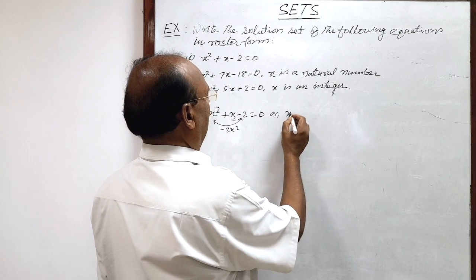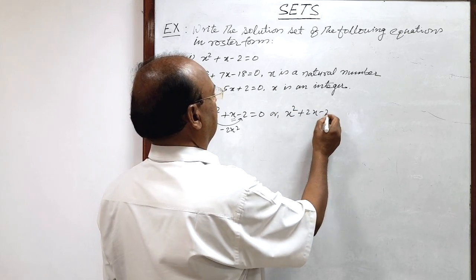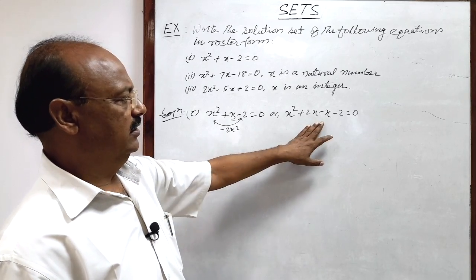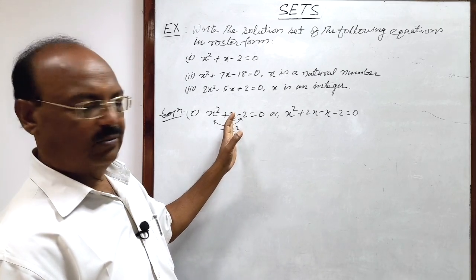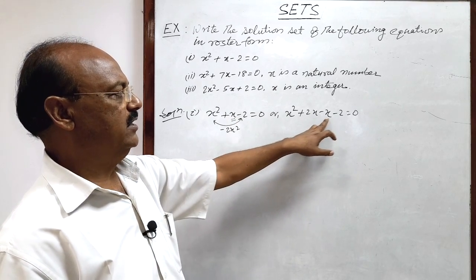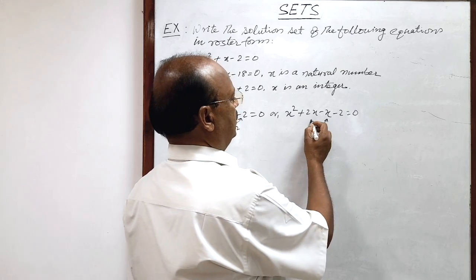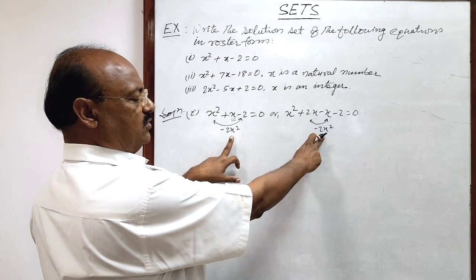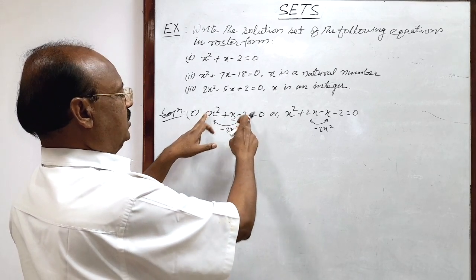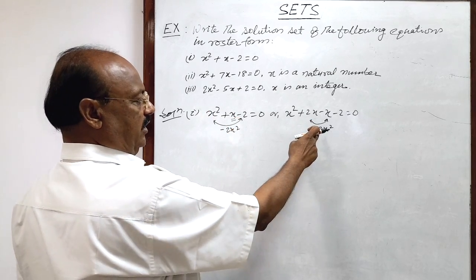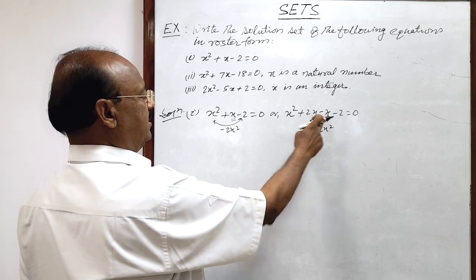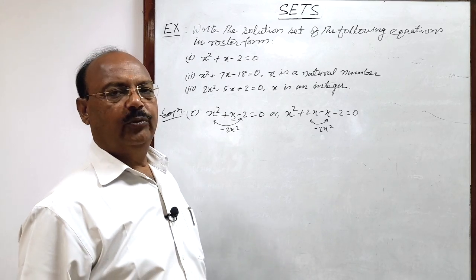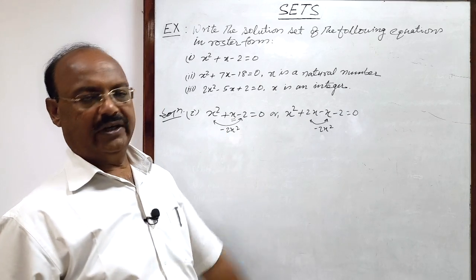So this can be written as x squared plus two x minus x minus two is equal to zero. You see two x minus x is x, no problem. The product of the two middle terms, two x and minus x, is minus two x squared — equal to the product of the first and last terms. This is the splitting condition you studied in the quadratic equations chapter.